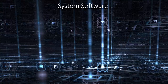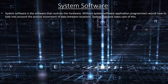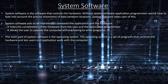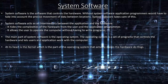System software is software that controls the hardware. Without system software, application programmers would have to take into account the precise movement of data between locations. System software takes care of this. It acts as an intermediary between the application and the hardware, hides the complexities of the hardware from the user and application programmer, and allows the user to operate the computer without having to write programs. The main part of system software is the operating system — a set of programs that controls the hardware and lets users and applications work with the computer. At its heart is the kernel, which is the part of the operating system that actually makes the hardware do things.